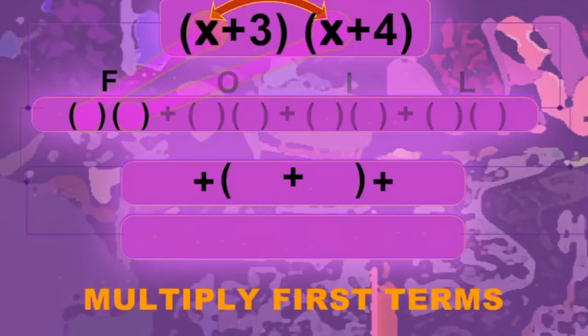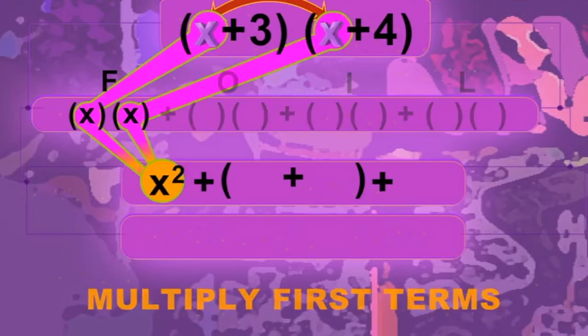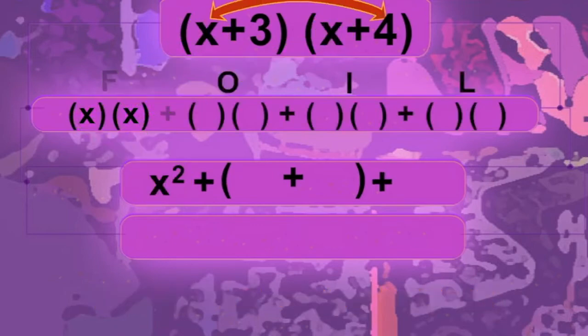First, multiply the first two terms: X times X is X squared.